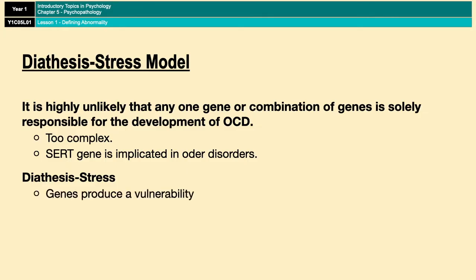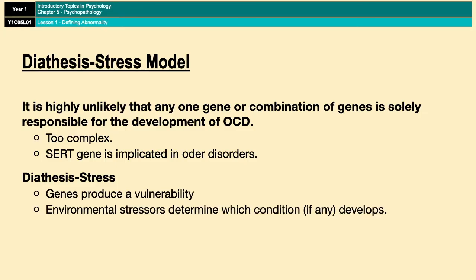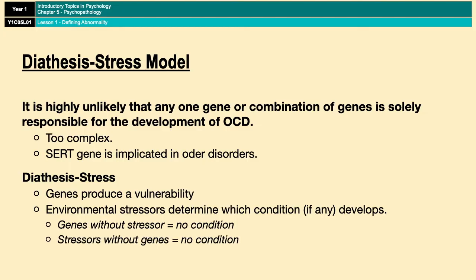It's more likely that certain environmental stresses such as divorce, death of a loved one, stress at work, or any other form of psychological trauma would trigger the condition in those people that have the vulnerability. This is known as the diathesis stress model: the diathesis is the genetic vulnerability and the stress is the trauma that acts as a trigger. If you have the vulnerability but never experience a stressor you won't develop the condition, and vice versa. Genes work together with the environment to produce OCD.